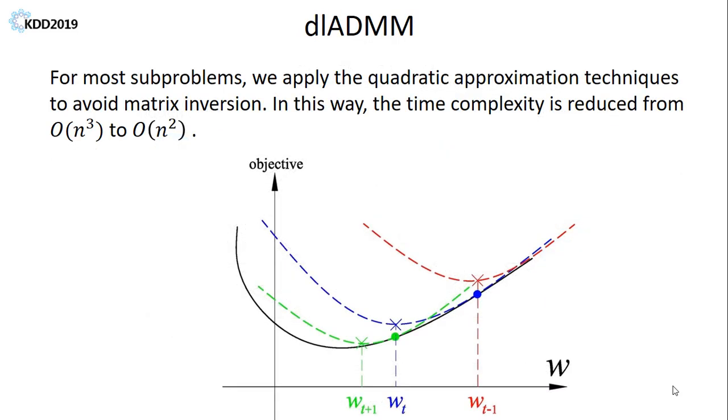Furthermore, we do not solve sub-problems of DL-ADMM directly. Instead, we approximate these sub-problems by quadratic Taylor expansion, which avoids the operation of matrix inversion and enhances time efficiency, reducing it from cubic to square with regard to feature dimensions.